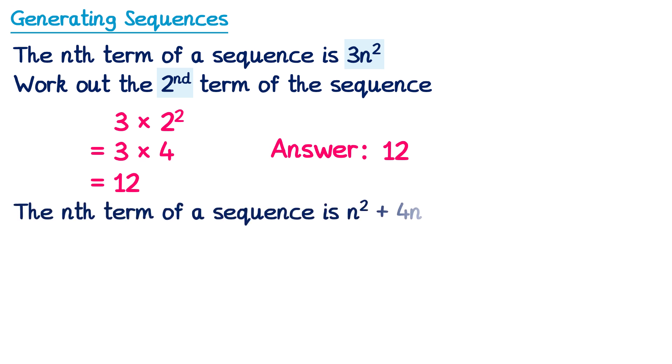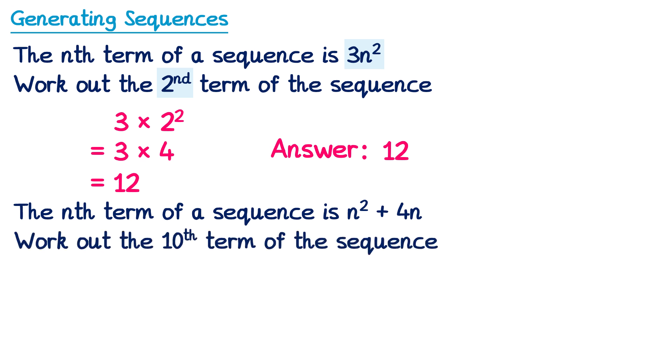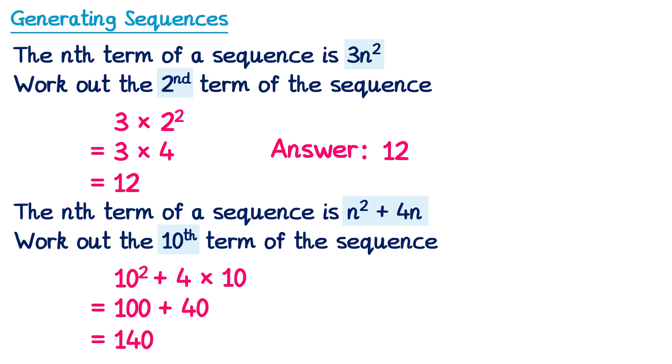For this question, the nth term of a sequence is n squared plus 4n, and we need to work out the tenth term of the sequence. This nth term has two n's in it — we've got the n for the n squared and the n for the 4n. Since we're working out the tenth term, we substitute n for 10 in both places. So instead of n squared, it's 10 squared, and then we add 4 lots of 10. 10 squared is 100, and 4 times 10 is 40, so it's 100 plus 40, which is 140.